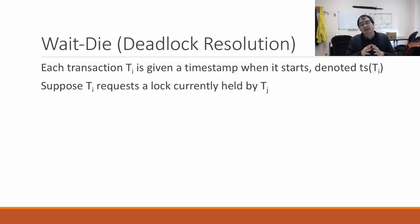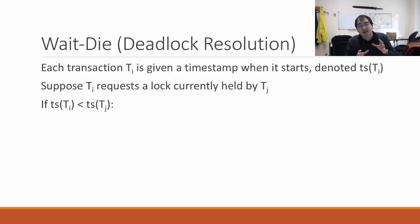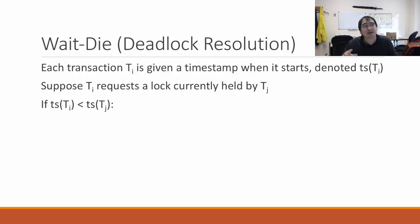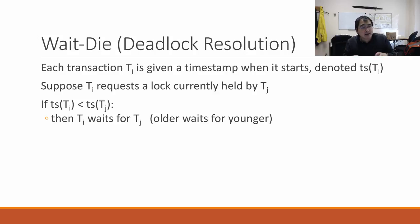Assume transaction i is requesting a lock currently held by transaction j. In wait-die, if TS(Ti) < TS(Tj) — meaning transaction i is older than transaction j — the older transaction i will wait for the younger transaction j to finish its work. Once j finishes, it relinquishes its lock and i can proceed.